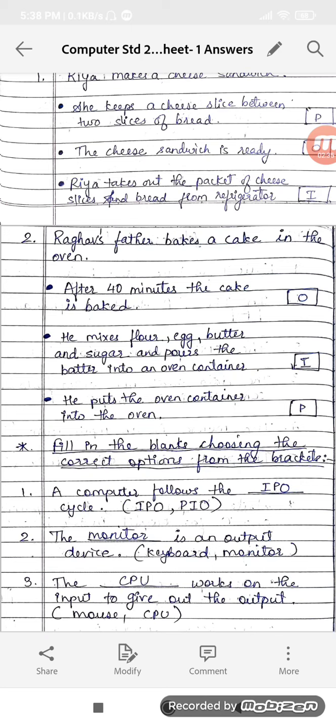Now what will be the input? The second point will be input, right? He mixes flour, egg, butter, and sugar and pours the batter into an oven container. That will be your input. Now he puts the oven container into the oven. That will be a process. And after 40 minutes the cake is baked, that will be your output.